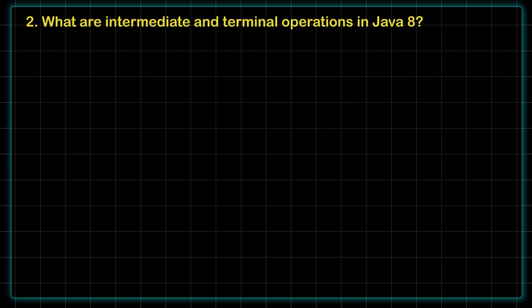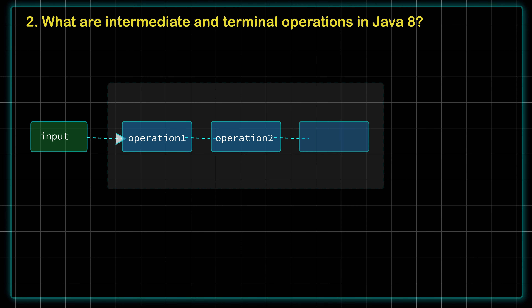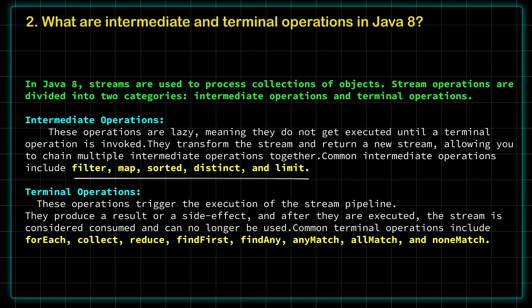Moving to the next question: what are intermediate and terminal operations in Java 8? In general, on a given input, if we want to extract a transformed output, we need to perform several intermediate operations on that input. Java 8 supports these intermediate operations, which get executed sequentially one after another. The output from these intermediate operations is fed as input to the terminal operations. Examples of intermediate operations in Java 8 include: filter, map, sorted, distinct, and limit.